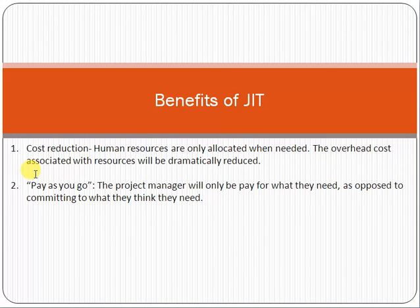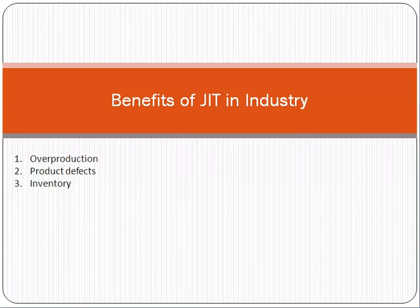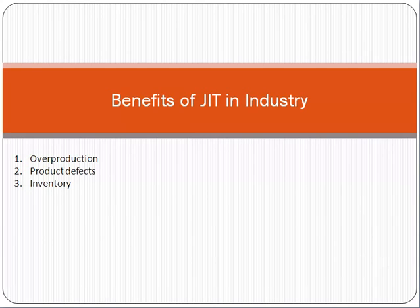Pay as you go means: for however much you have used a resource — whether hardware or human — you pay according to the usage. You are not paying for idle work or unused resources. With respect to industry — car factories or any manufacturing facility — JIT reduces overproduction. It also reduces product defects because you are using resources according to your need, not overusing them.